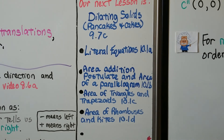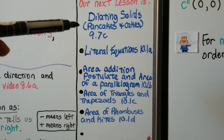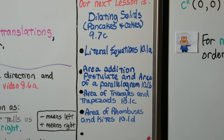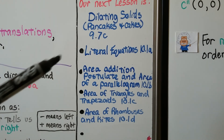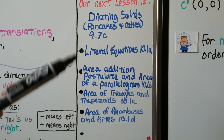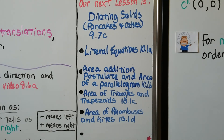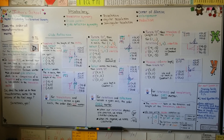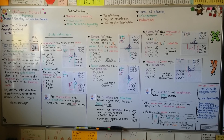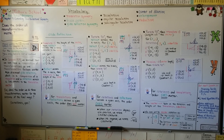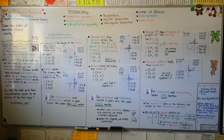In our next lesson, we're going to talk about dilating solids — things like a cylinder or a prism. Some textbooks call them pancakes and cakes: pancakes are 2D figures and cakes are 3D figures. Then we'll move on to chapter 10 and start talking about area. I hope this video was helpful. You now have a reminder of what a glide reflection is, and you know that order does matter for rotations with reflections or translations, because you'll end up in different quadrants. See you next time.